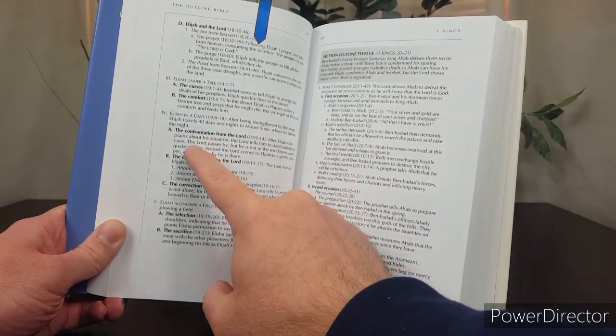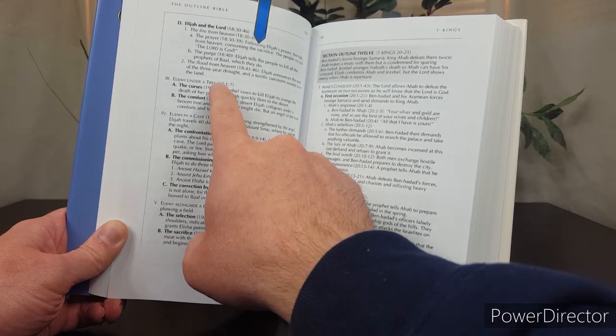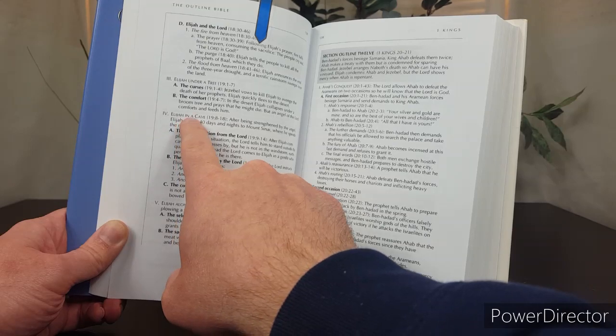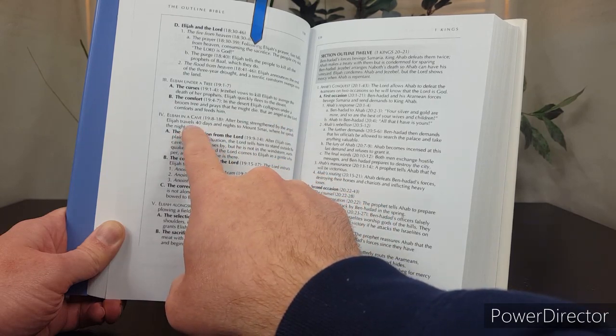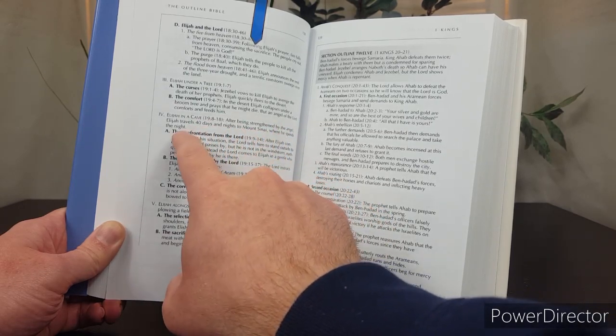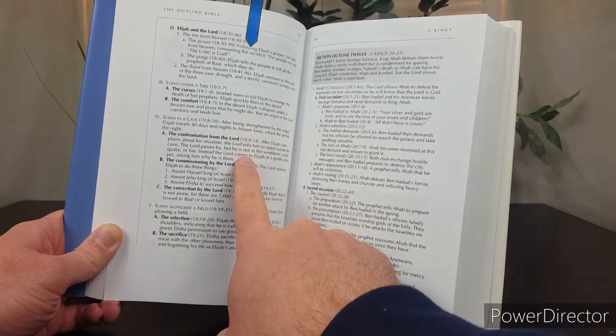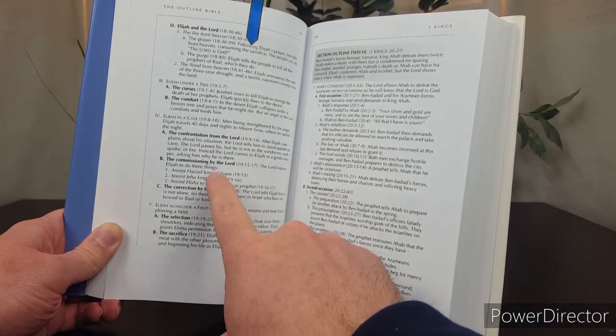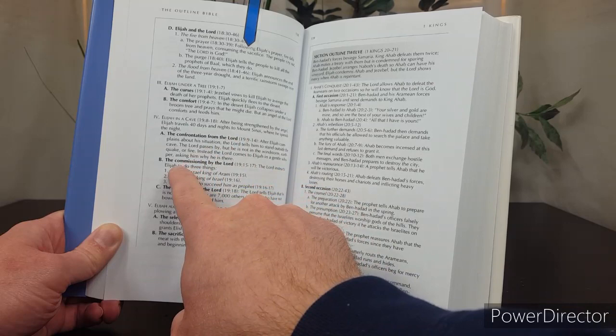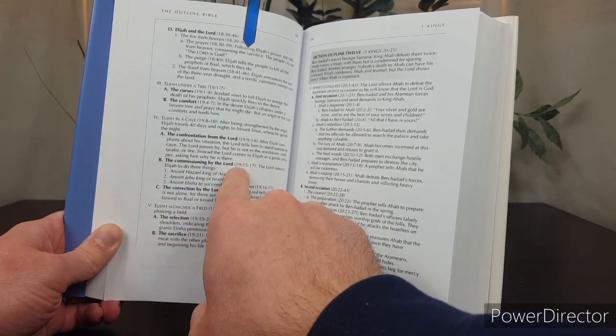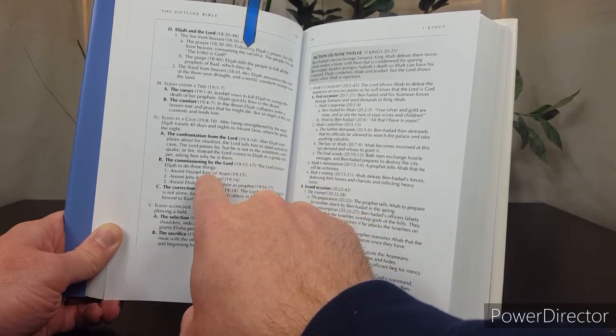So, let's look at another example. So, the next passage is Elijah in a cave. 1 Kings 19, verses 8 through 18. So, verses 1 through 7, Elijah under a tree. Verses 8 through 18, Elijah in a cave. After being strengthened by the angel, Elijah travels 40 days and nights to Mount Sinai, where he spends the night. Point A, the confrontation from the Lord, verses 9 through 14. I won't read every word, every description now, but let me just give you the outline. The confrontation from the Lord, chapter 19, verses 9 through 14. B, the commissioning by the Lord, chapter 19, verses 15 to 17.